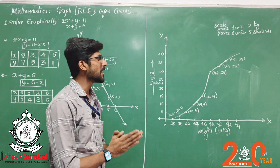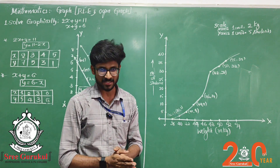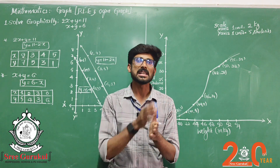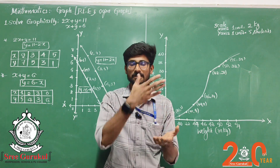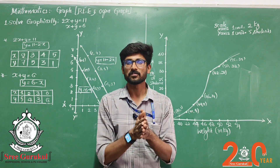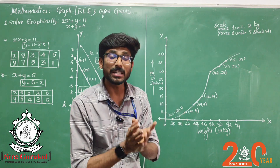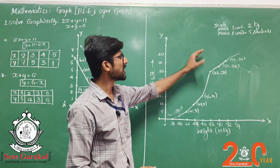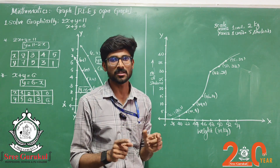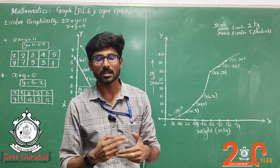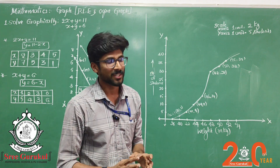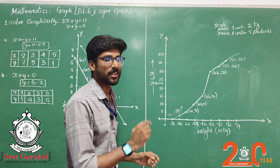Now coming to the ogive graph, which is from the chapter Statistics — a three-mark question. The expected format is a tabular cumulative frequency column: either 'less than' or 'more than' type, or already converted to cumulative frequency. It is simply plotting the ready information onto the paper. Questions are typically based on topics like medical checkup or production yield.